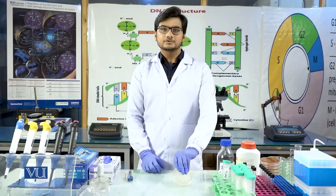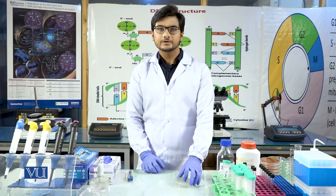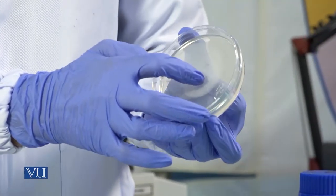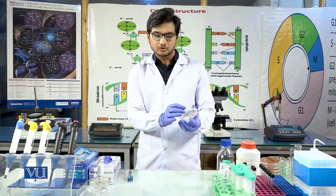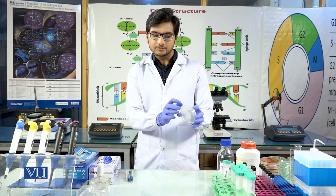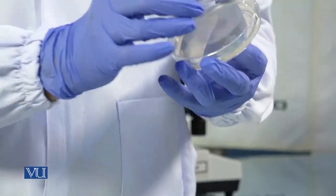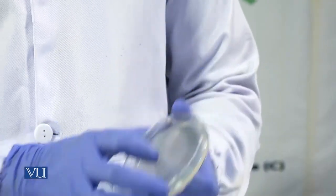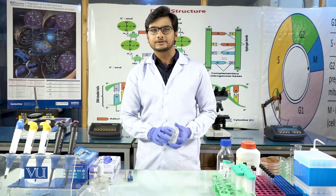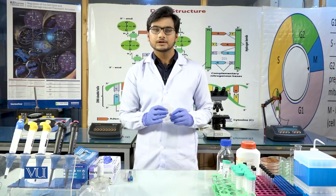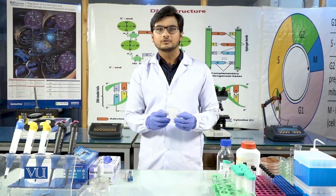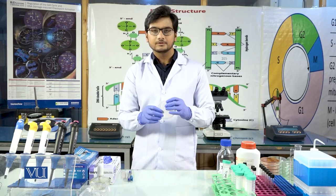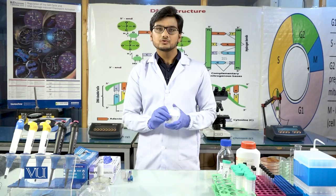These are disposable petri plates made of plastic. After pouring, we keep it straight and allow it to solidify. After it solidifies, we invert it because humidity will cause droplets to fall on it, which will give false positive or false negative results. You have to remember that this layer should not be too thick or too thin. If the layer is too thick, the zone of inhibition will be falsely small.